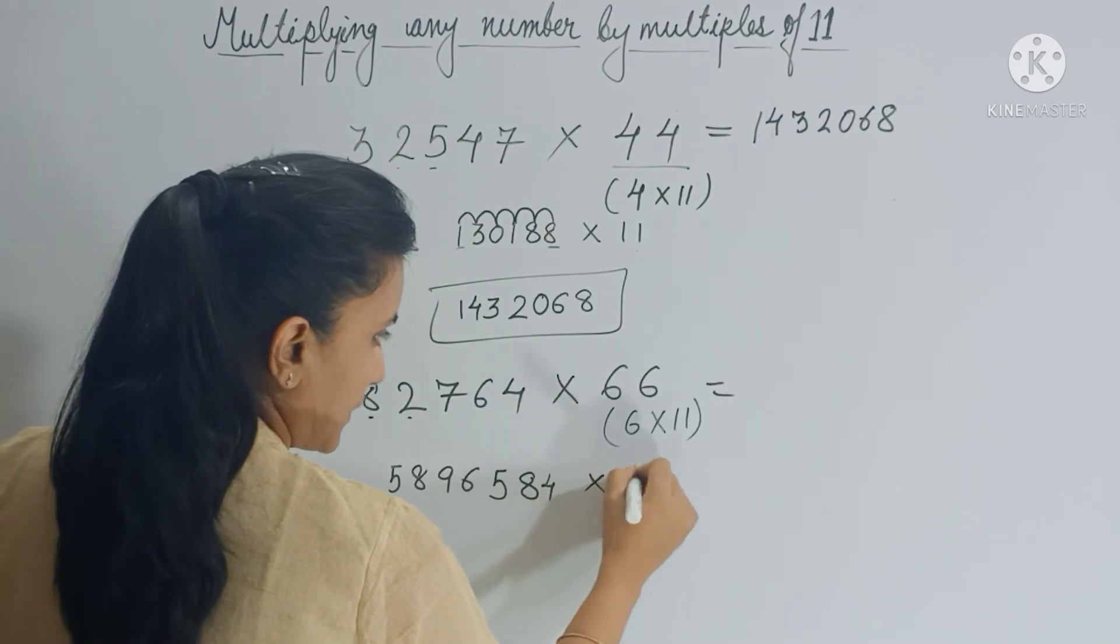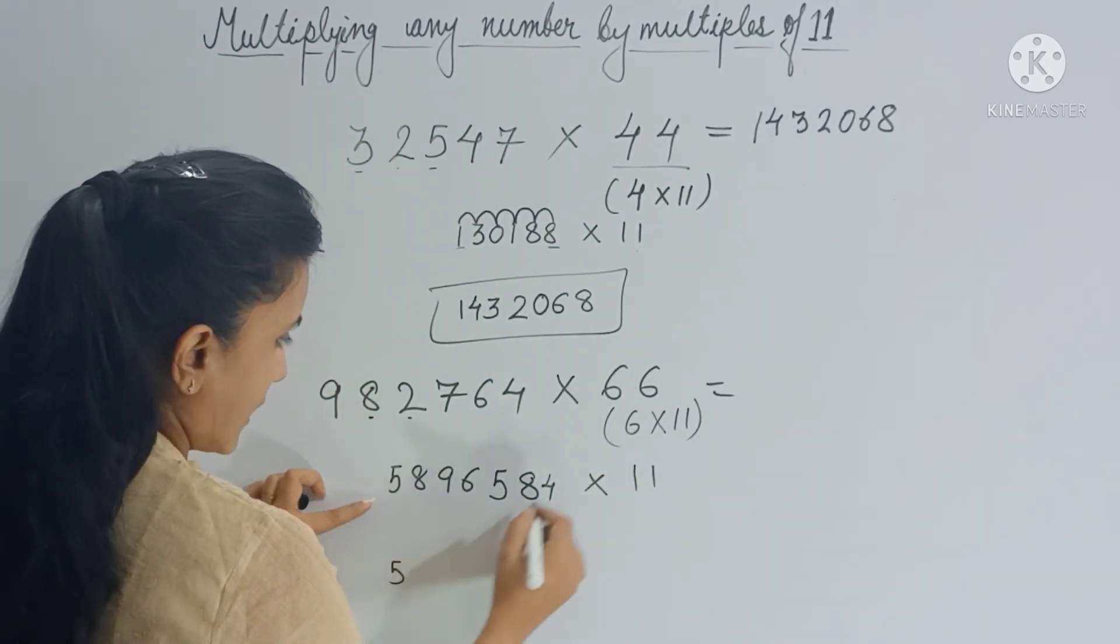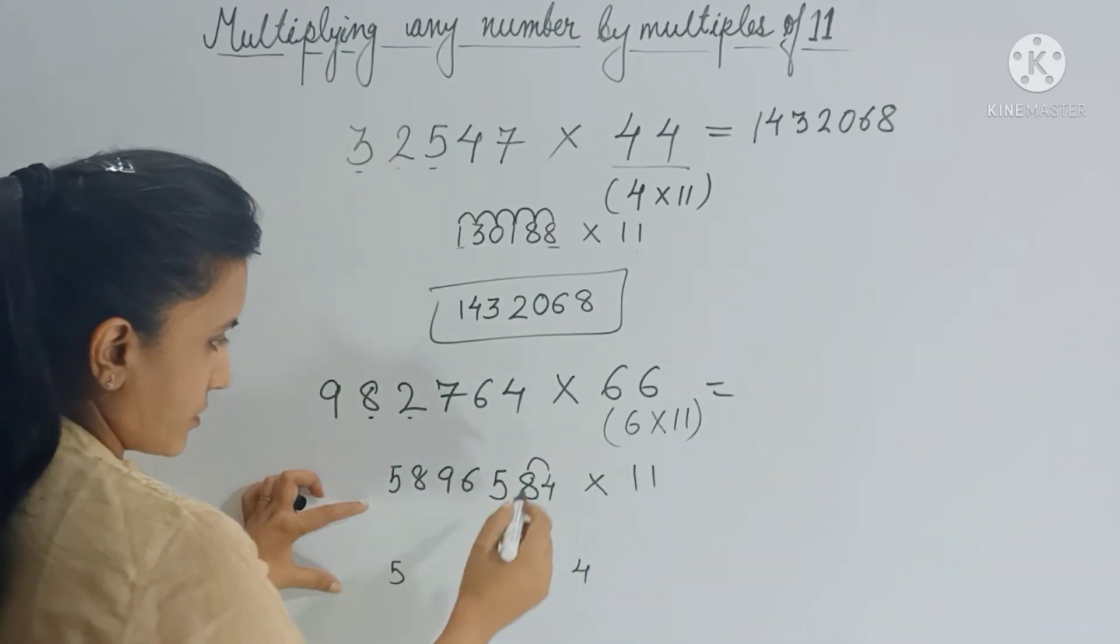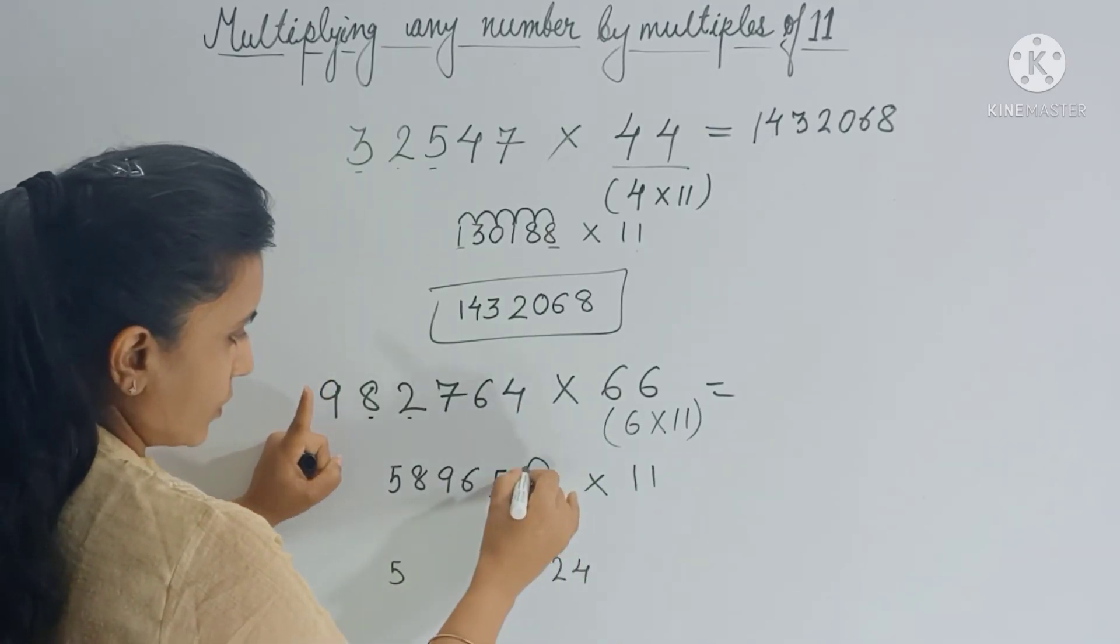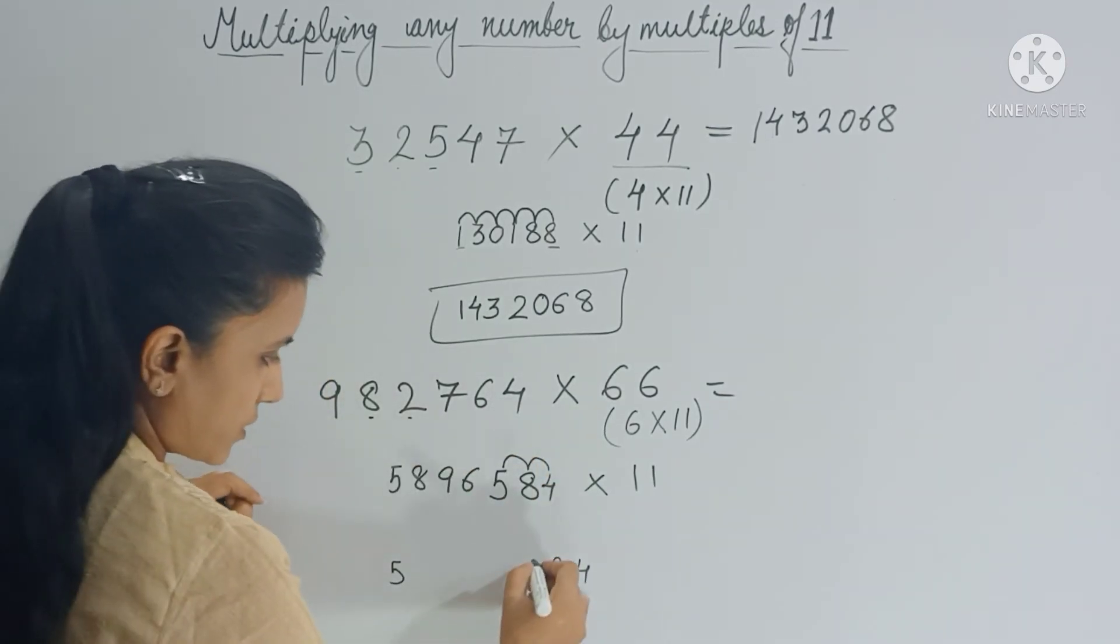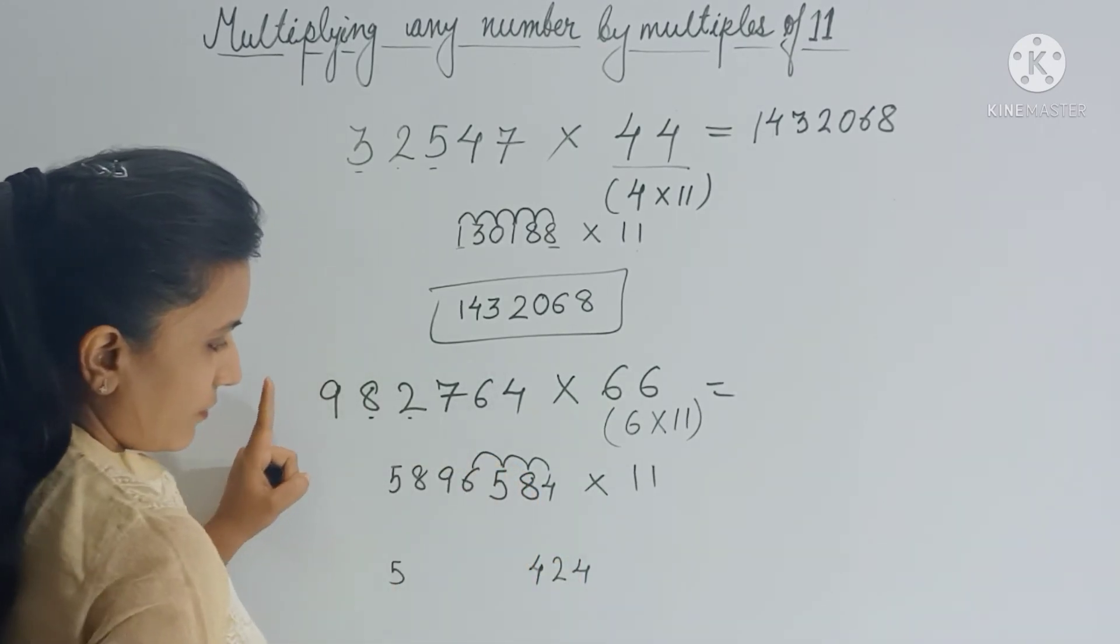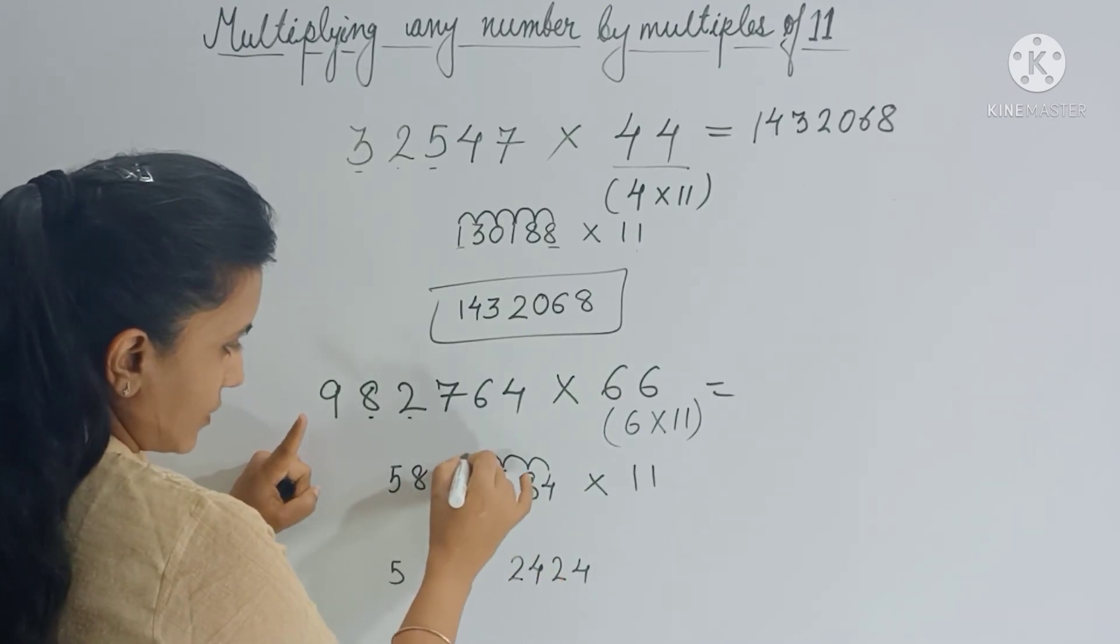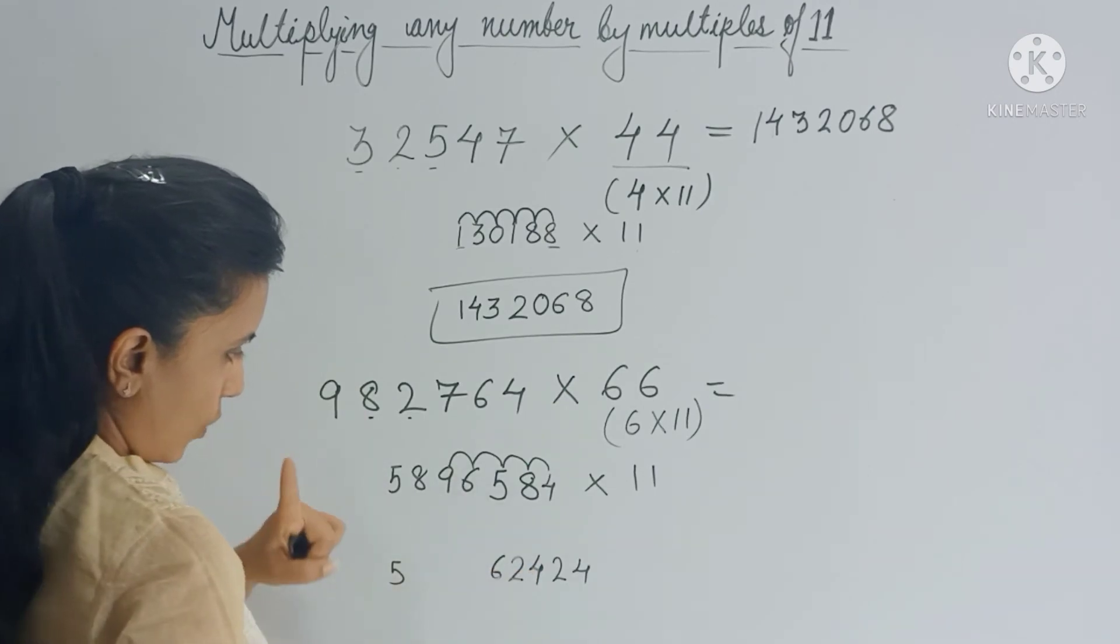Now this number you have to multiply with 11. So use the trick. Copy first and the last digit as it is and add these numbers in pairs. So 8 plus 4 is 12, 1 is carry forward. 8 plus 5 is 13, 13 plus 1 is 14, so 1 is carry forward. 5 plus 6 is 11, 11 plus 1 is 12, so 1 is carry forward. Now 6 plus 9 is 15, 15 plus 1 gives 16, 1 is carry forward.